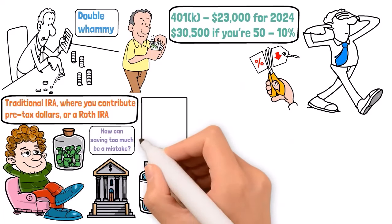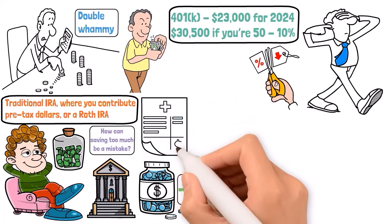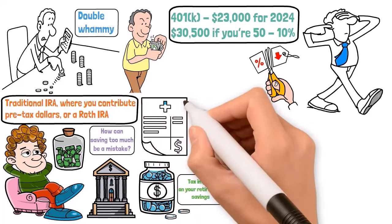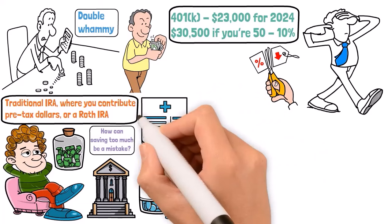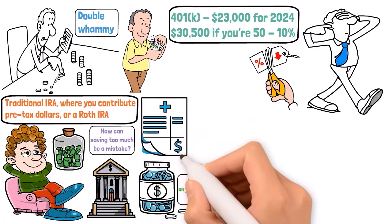Healthcare costs in retirement can be a major expense. In fact, the average retired couple at age 65 can expect to spend around $315,000 on healthcare expenses in retirement. That's no small change.